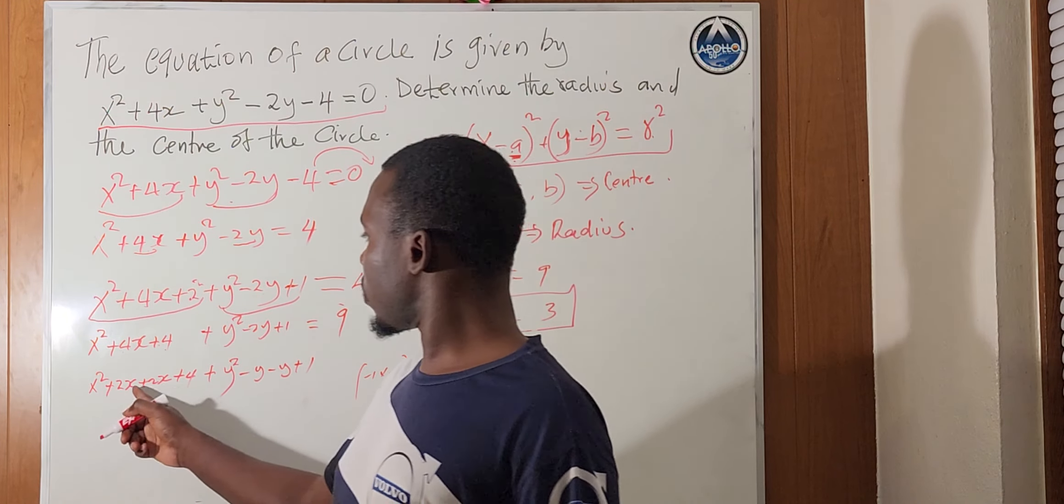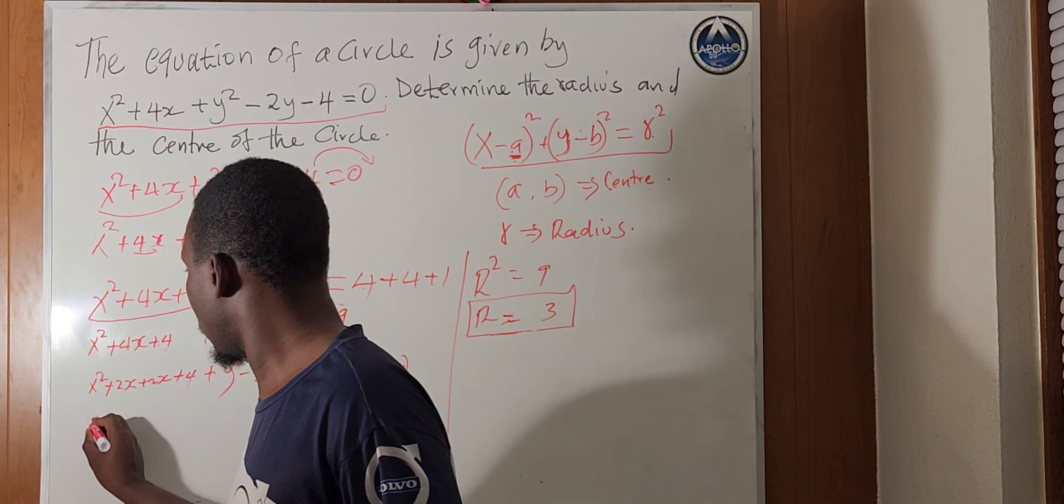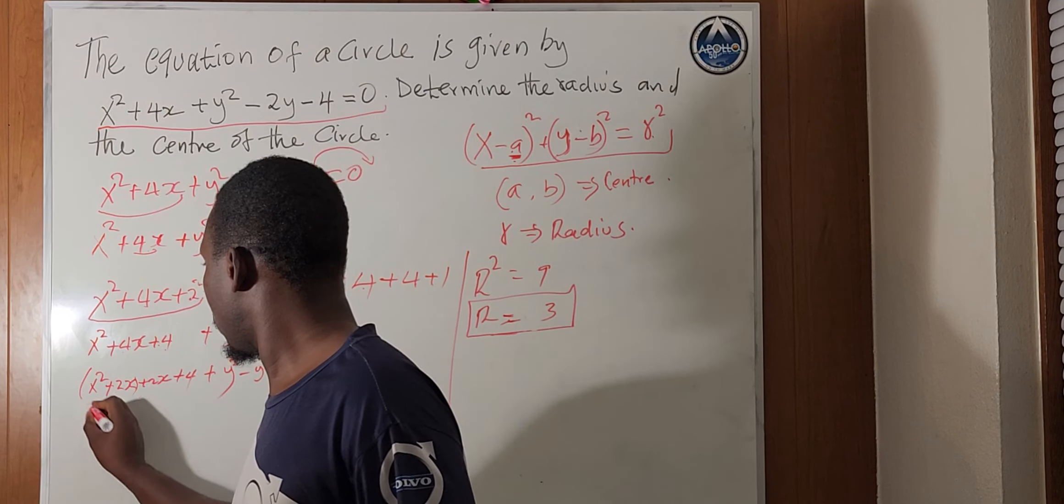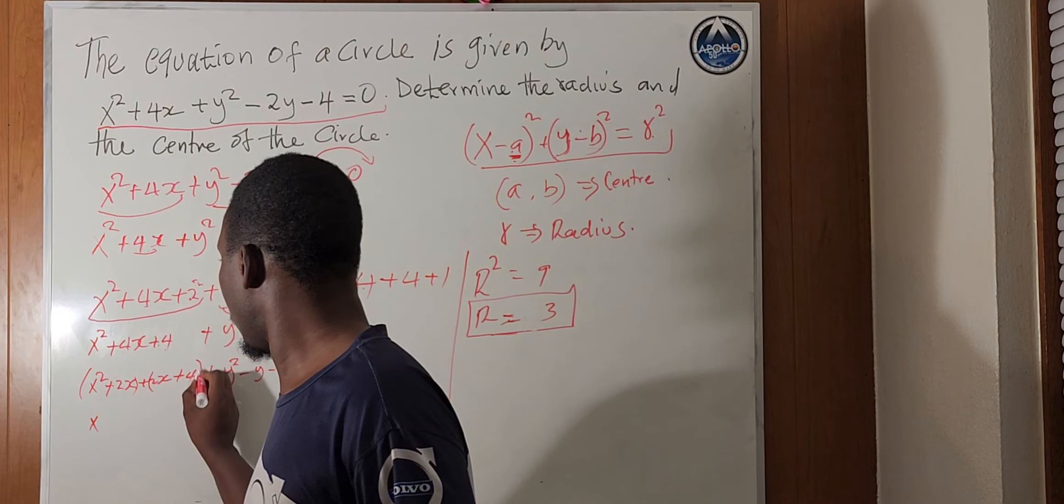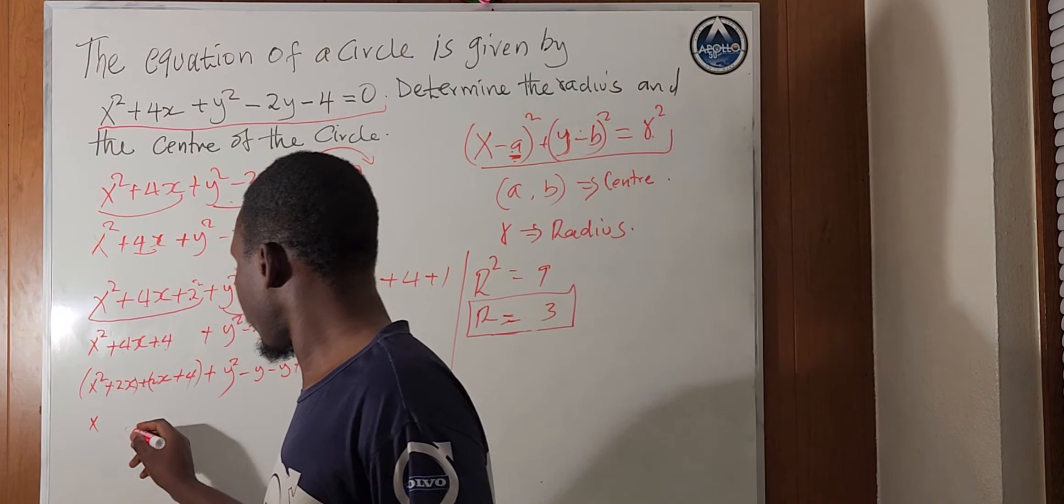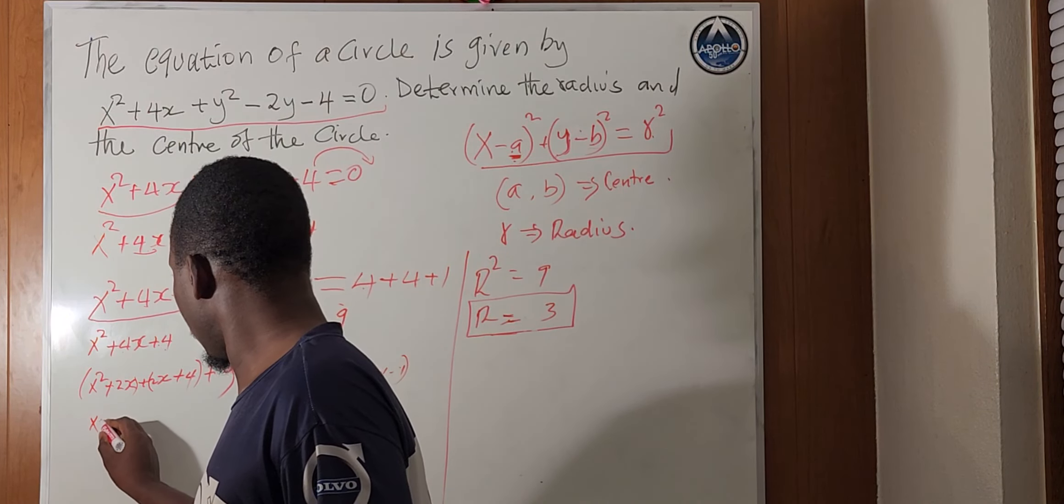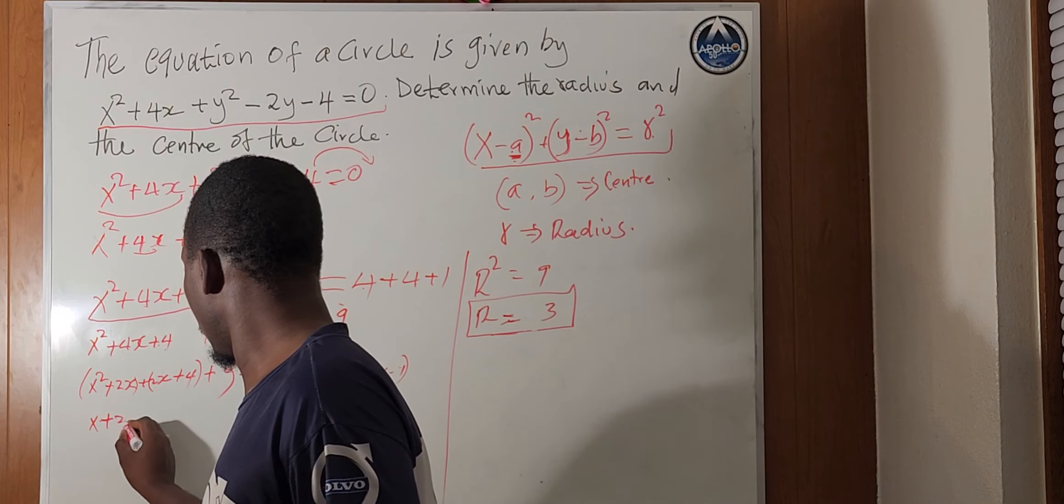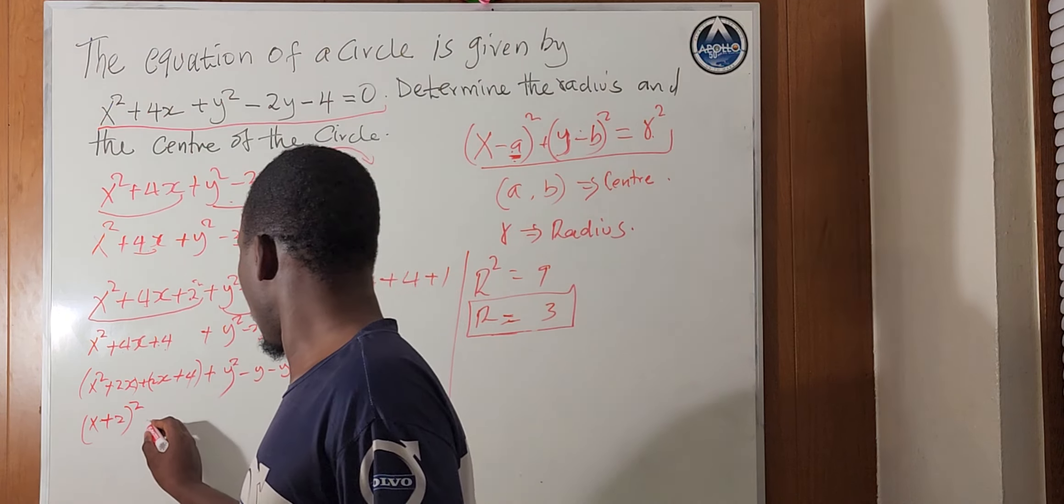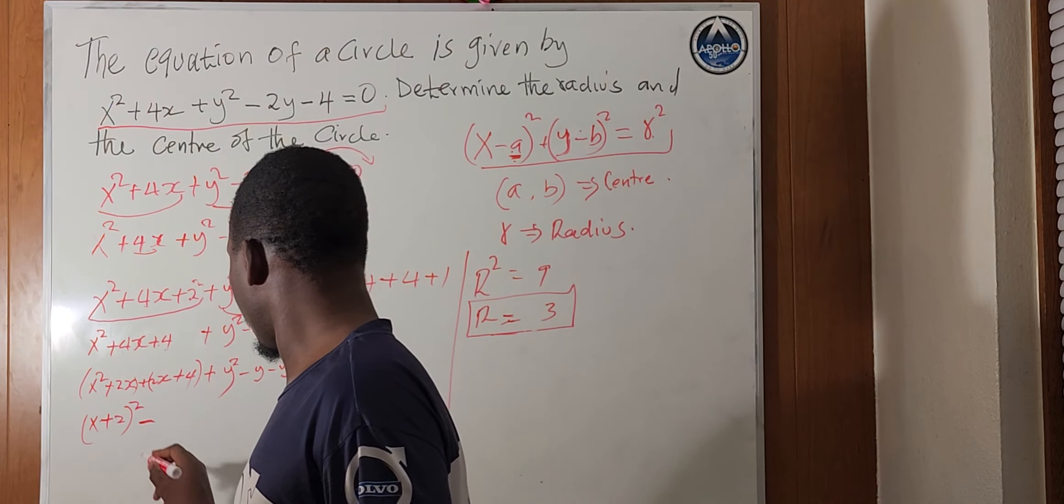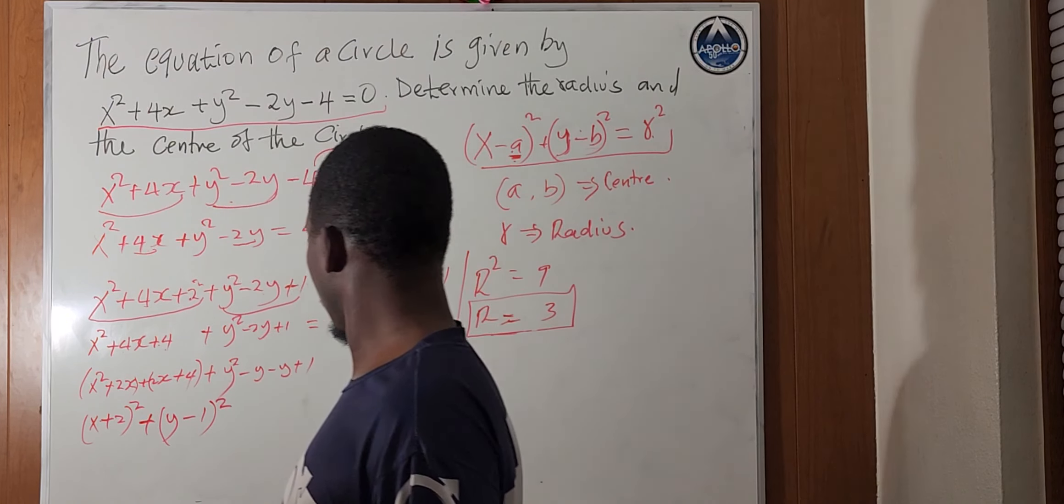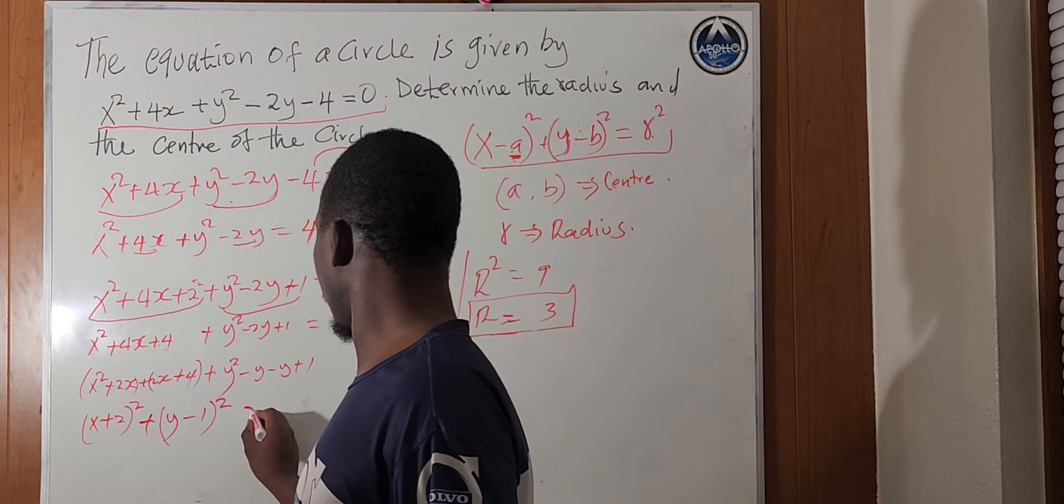So, let's factor out here. We'll get x into, we can factor out these 2, x into x plus 2, actually. That's x plus 2, that's x plus 2 squared. Then, the other one will be plus y minus 1 squared, equals 9.